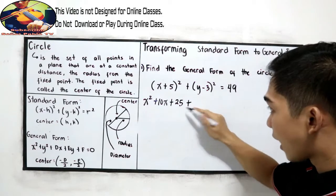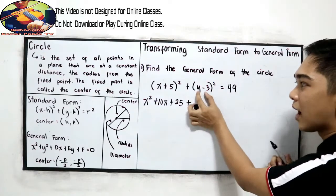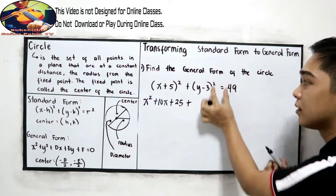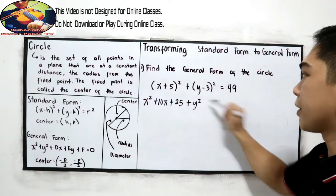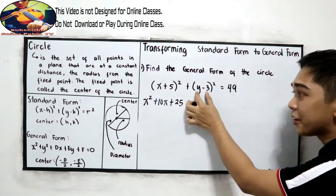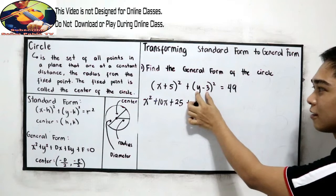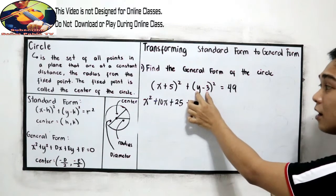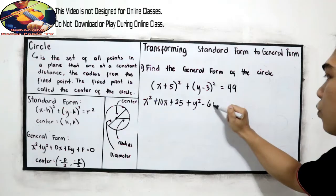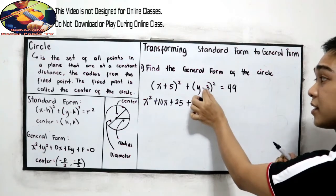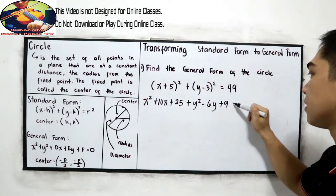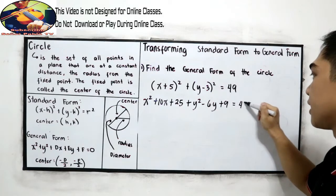Copy the plus sign. Now square the first term, that is y squared. Multiply the first and second term: that is negative 3y, times 2, giving negative 6y. And square the second term: positive 9. Is equal to 49.